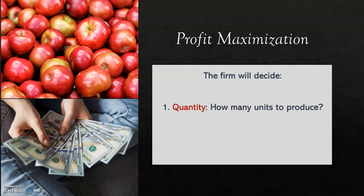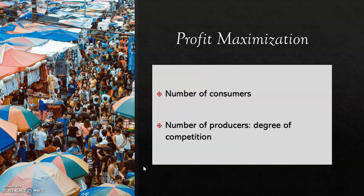The firm must make a decision regarding the quantity it will offer in the market, and sometimes it will also decide the price at which it sells its products. However, in other cases the price is given by the market and the firm must only decide whether to offer any product at that given price or not. This depends on the level of competition — the number of consumers and producers in the market.